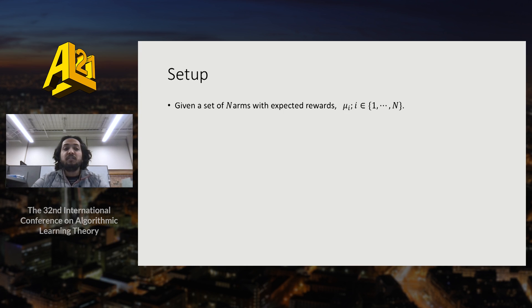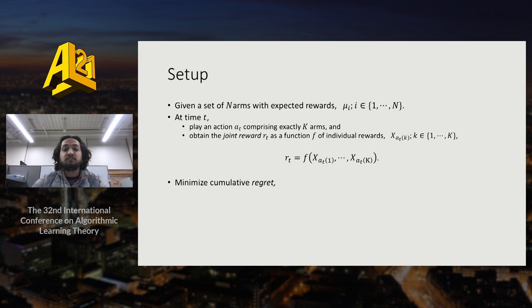For our setup, we consider N arms with expected rewards mu_i. At any time t, the agent plays an action a_t comprising exactly K arms and obtains a joint reward r_t as a function f of individual rewards. This function can possibly be non-linear which may not allow us to invert the individual arm rewards. We aim to minimize the cumulative regret which has the gap from not playing the best action a* instead of action a_t.